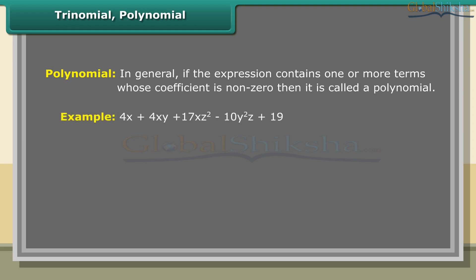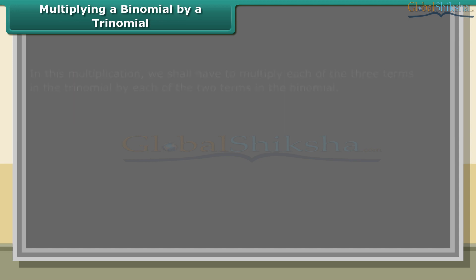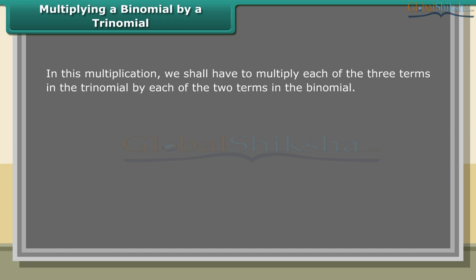In general, if the expression contains one or more terms whose coefficient is non-zero, then it is called a polynomial. Example: 4x plus 4xy plus 17xz² minus 10y²z plus 19.